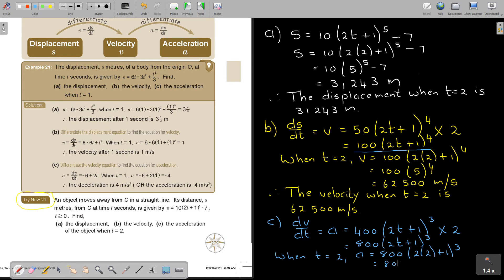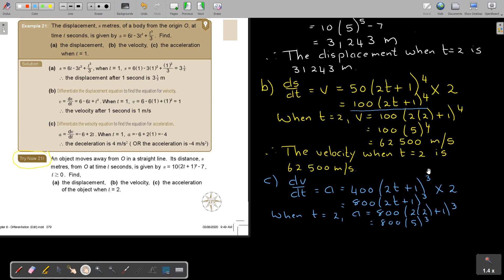And now I'm going to say when t is 2, the acceleration will be 800 times 2 plus 1 to the power of 3. And it will actually be that 800, it's again 5 to the power of 3. 5 to the power of 3 will be 125 times that 800, and that will be 100,000 meters per second squared. So therefore, the acceleration when t is 2 is 100,000 meters per second squared. And that's how you do this kind of sums.